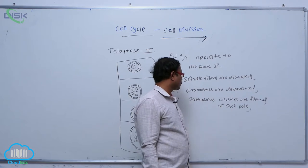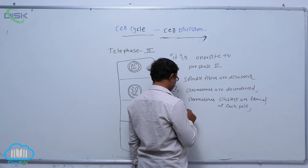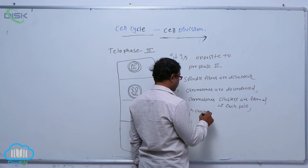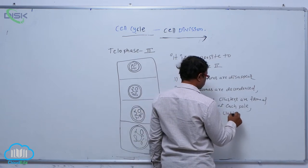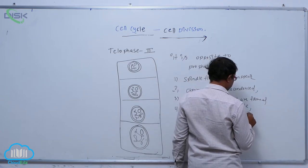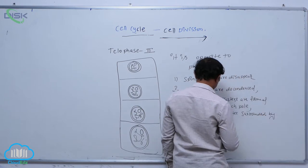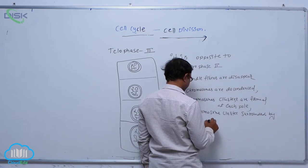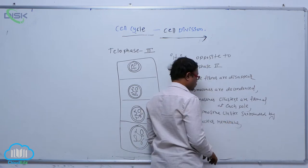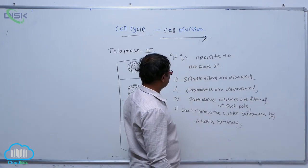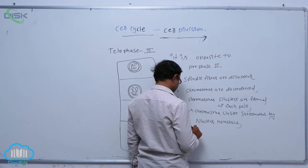Each chromosome cluster is surrounded by a nuclear membrane. After that, the nucleus reappears.